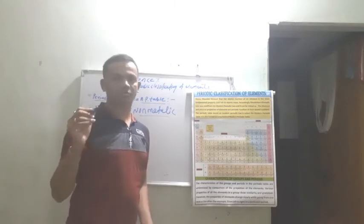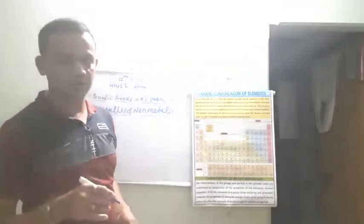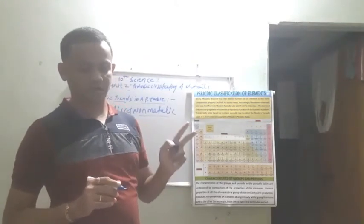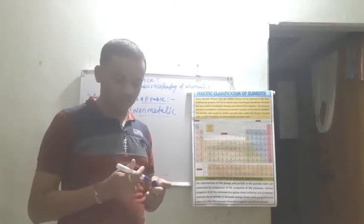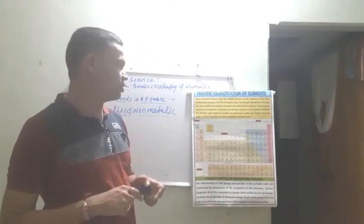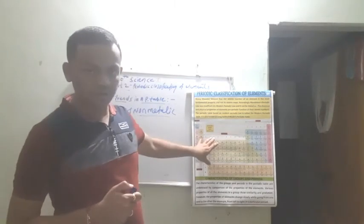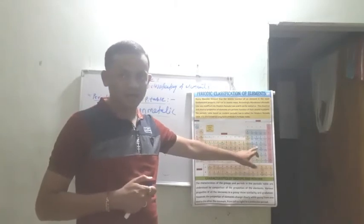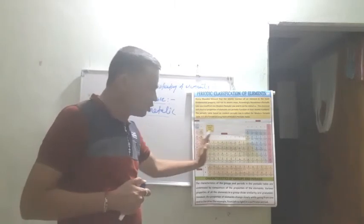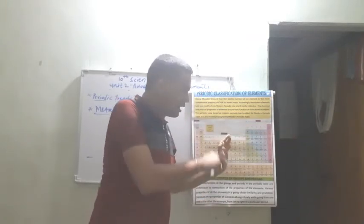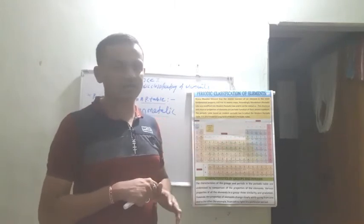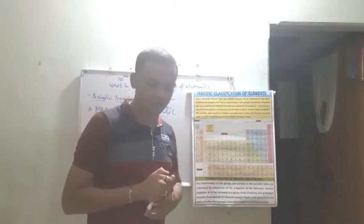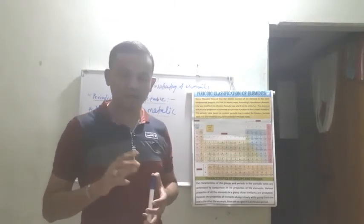In the modern periodic table there is a zigzag line. Elements which are present on this zigzag line, such as silicon and germanium, are metalloids. It is observed that metallic elements like sodium and magnesium are metals. Elements like germanium lie in between the two types, that is metals and non-metals. The periodic trends in metallic and non-metallic characters of elements are understood from their position in the modern periodic table.